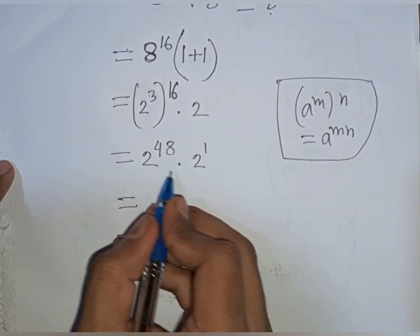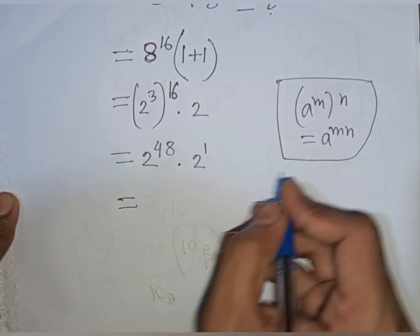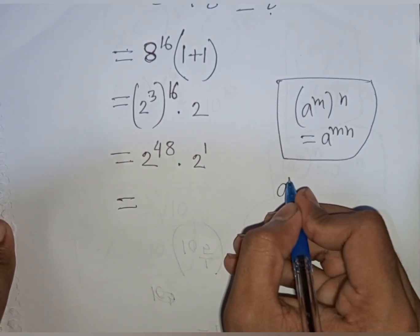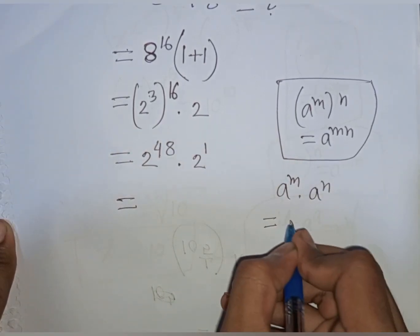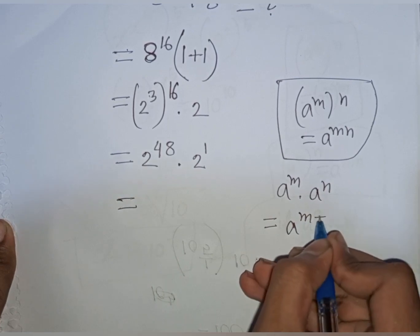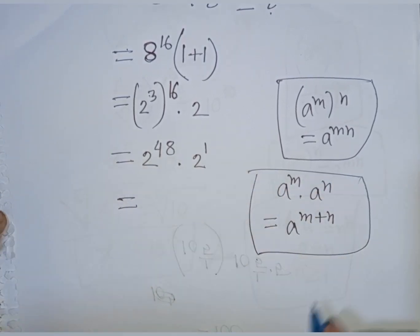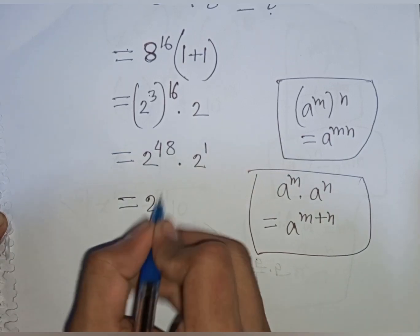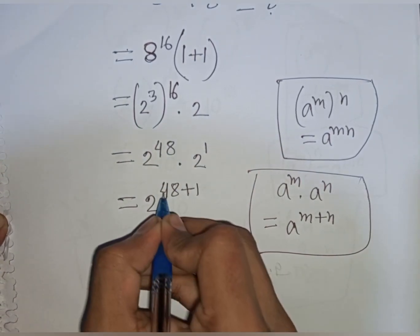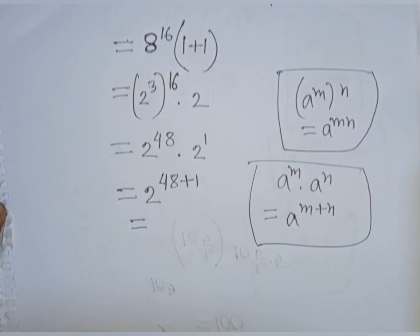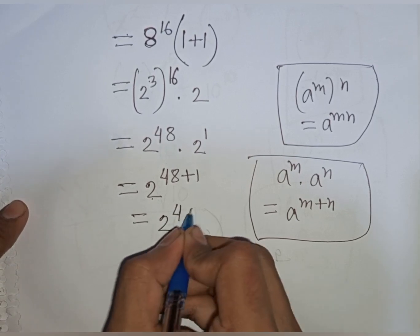That means 2 to the same base but different powers. Remember the exponential rule: a power m times a power n is equal to a power of m plus n. So according to this formula, we can write 2 power of 48 plus 1, which equals 2 power of 49. So 2 power 49 is our final answer.